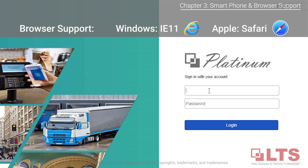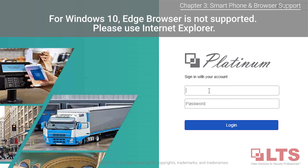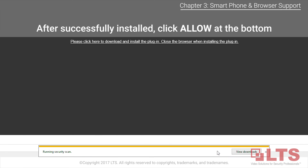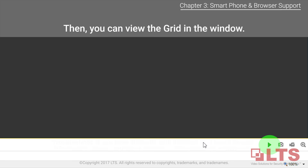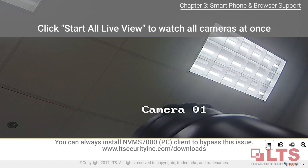Browser support: for Windows use Internet Explorer 11, and for Apple users use Safari. If you are using Windows 10, the Edge browser is not supported — please use Internet Explorer or the plugin will not load properly. After successfully installing the plugin and clicking allow at the bottom of your screen, you can view the grid in the window. Click the start all live view button to watch all cameras at once.